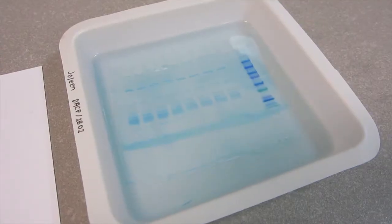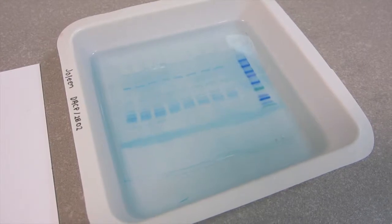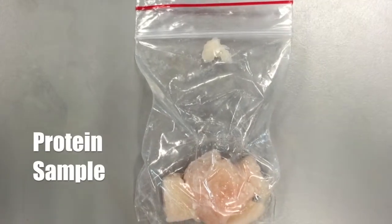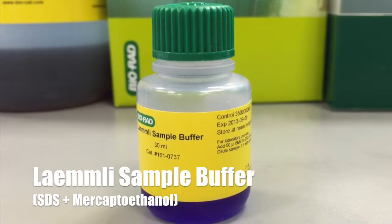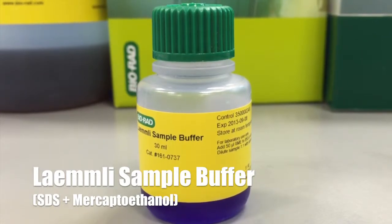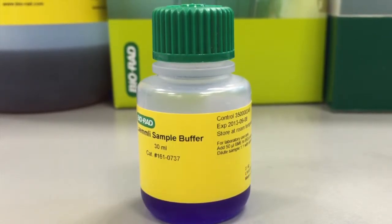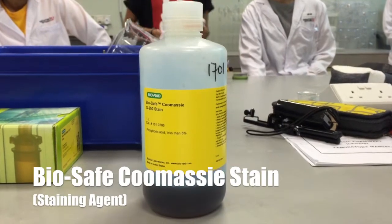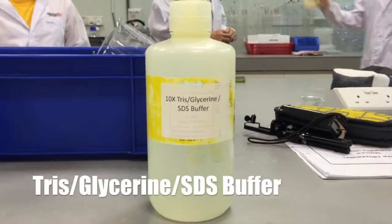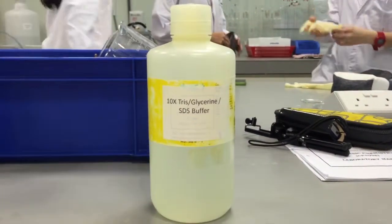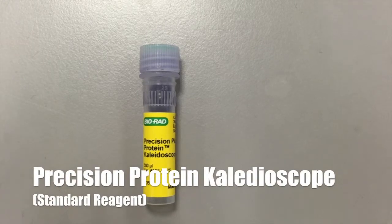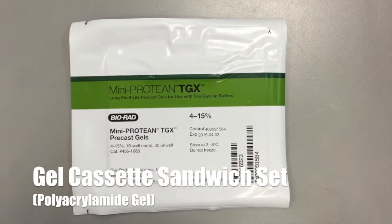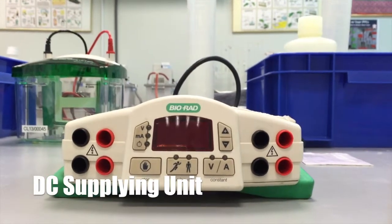We will require the following equipment and reagents: the protein sample, the Laemmli sample buffer containing SDS and beta-mercaptoethanol, Bio-Safe Coomassie stain, tris-glycine SDS buffer, the protein standard, ready-gel cassette, and the electrophoresis unit.